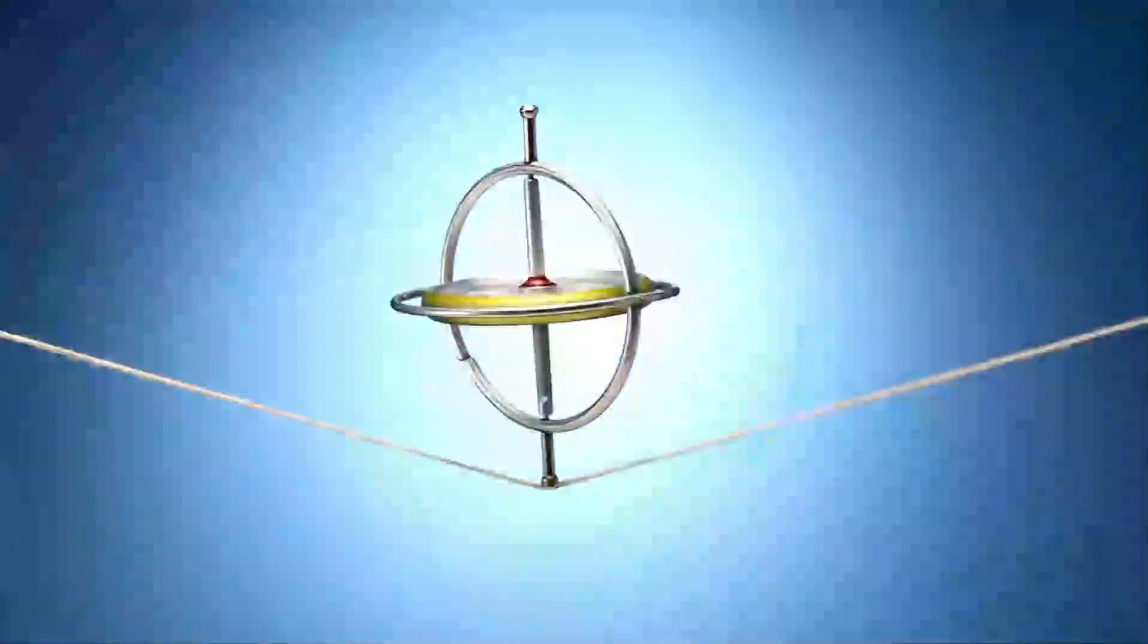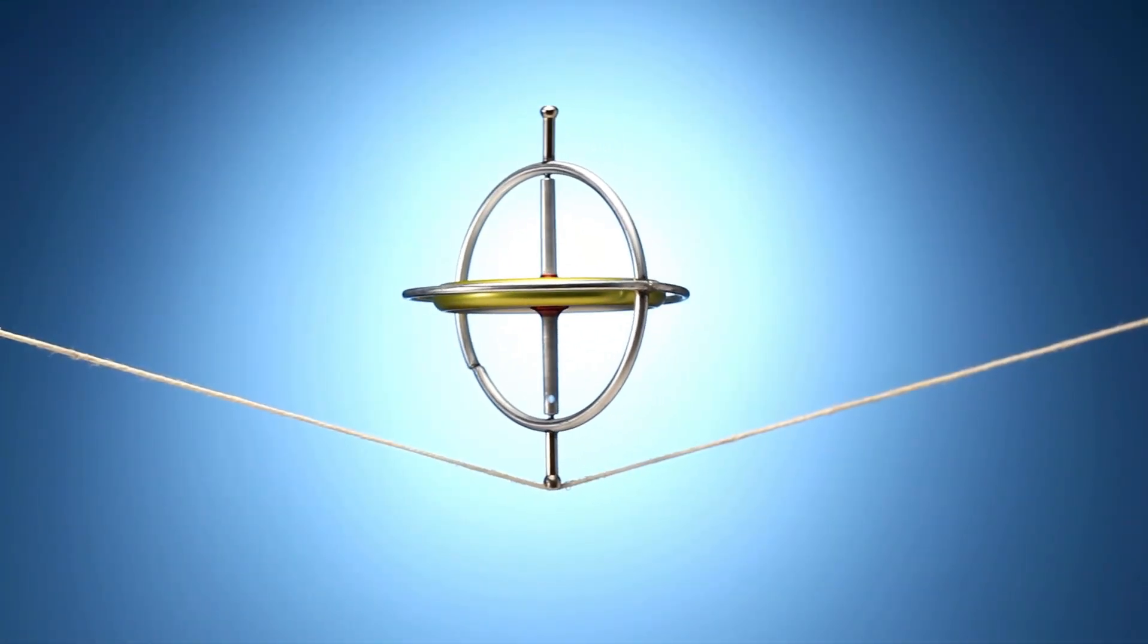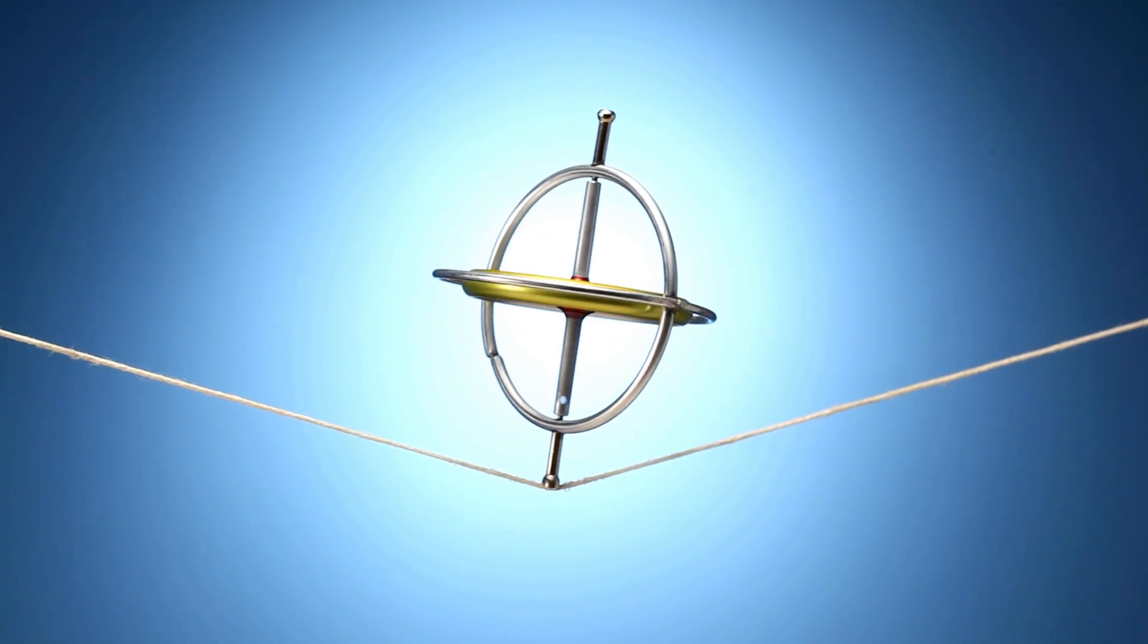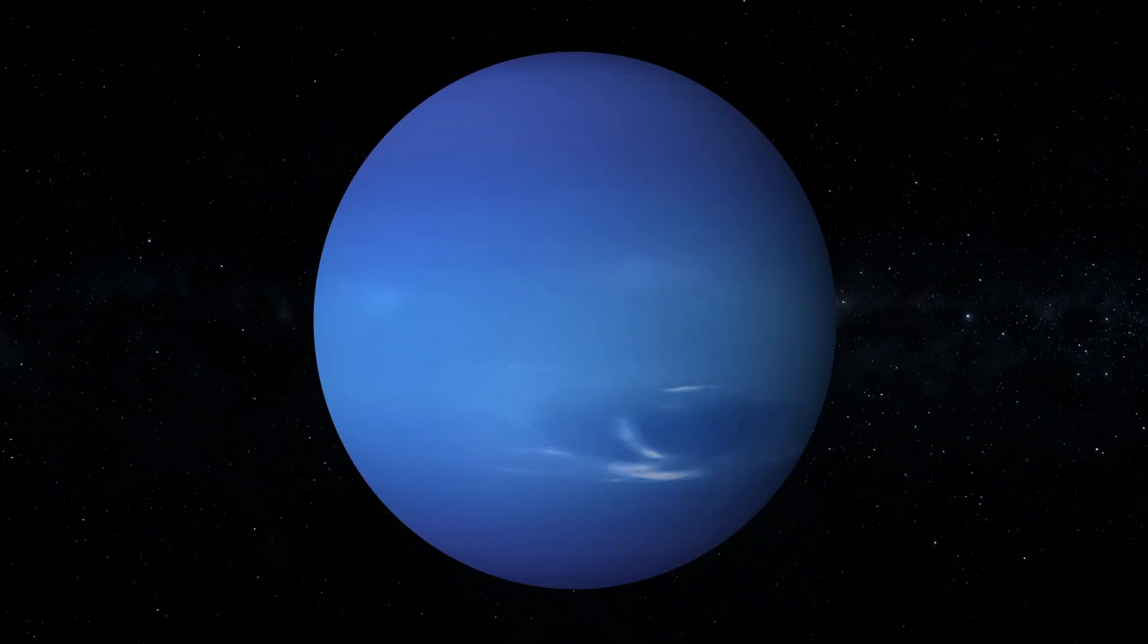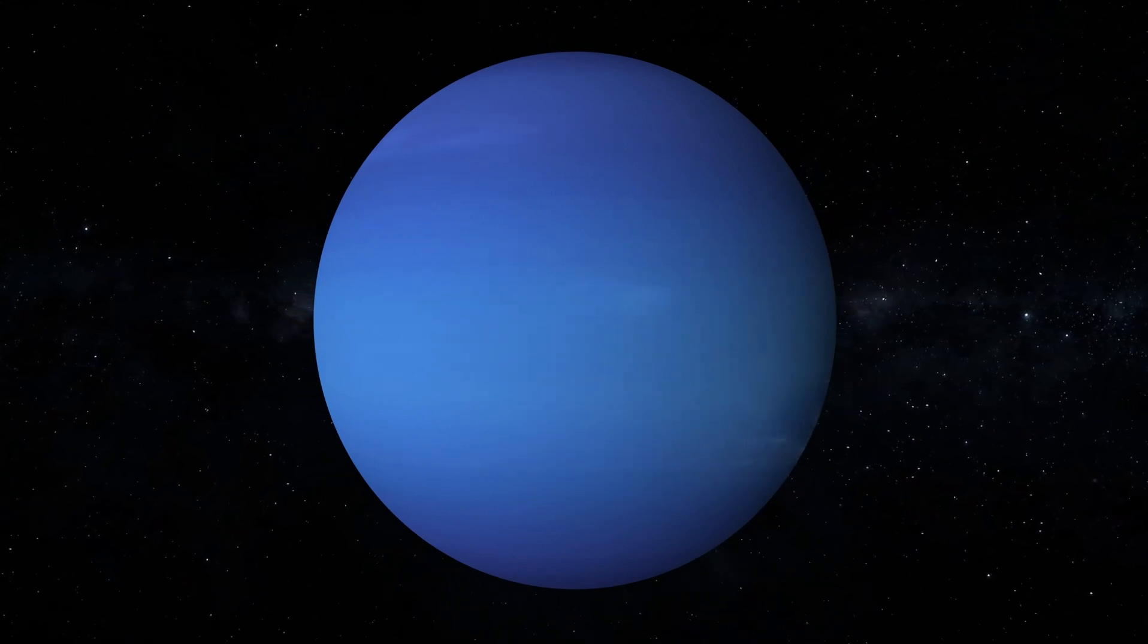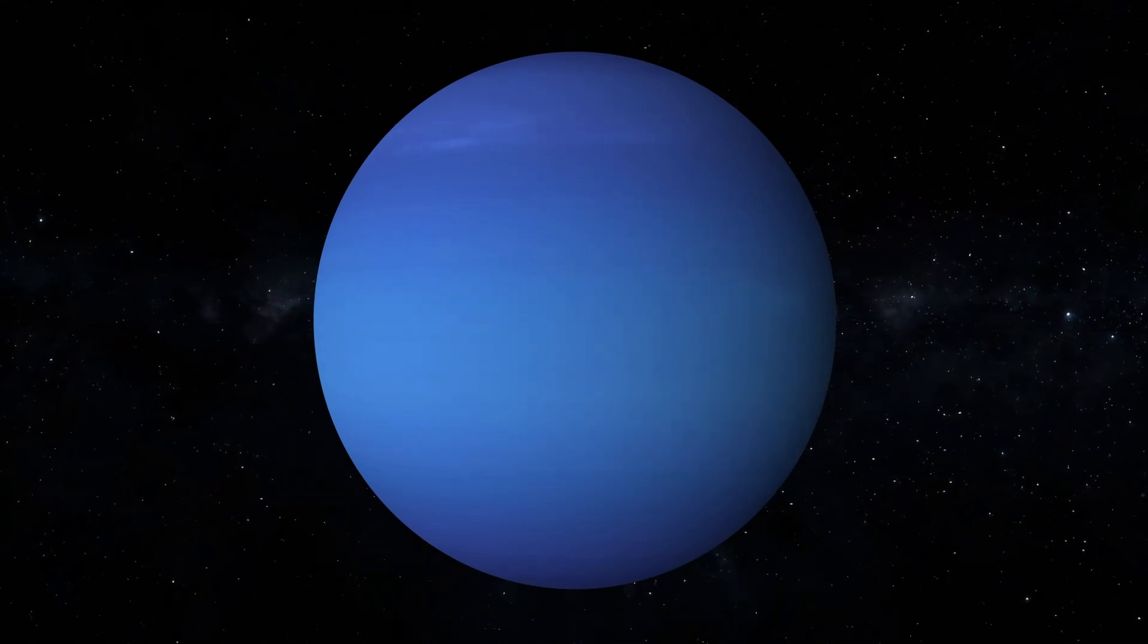But that's not all, there are also hot Jupiters, which are gas giants that orbit extremely close to their host star. They exist in a fiery world with temperatures that could melt metal. Imagine being able to witness such a planet up close, with its raging storms and blistering heat.